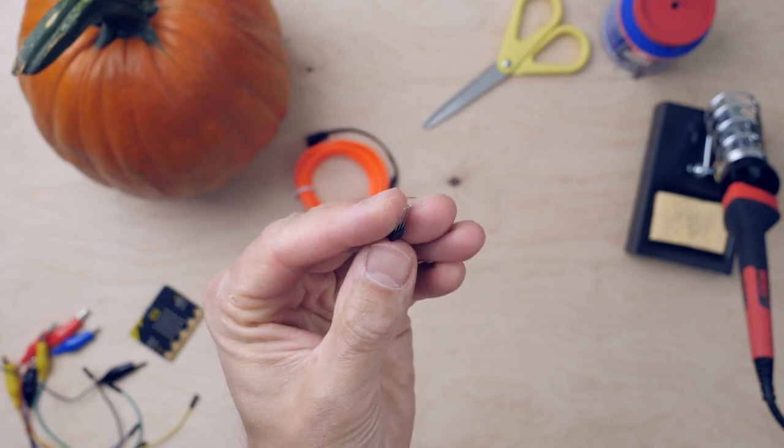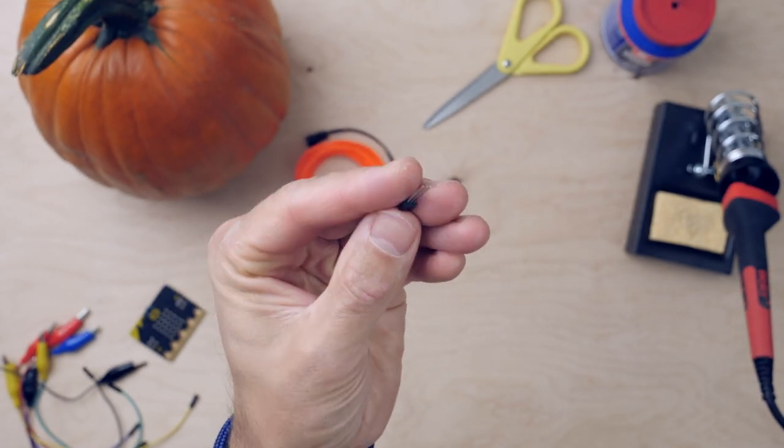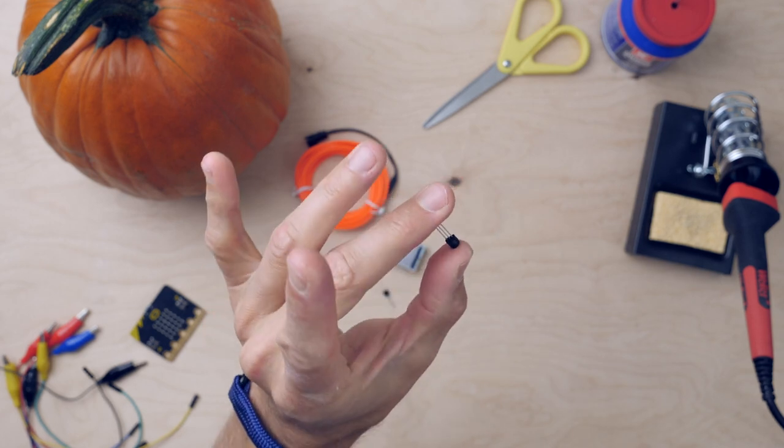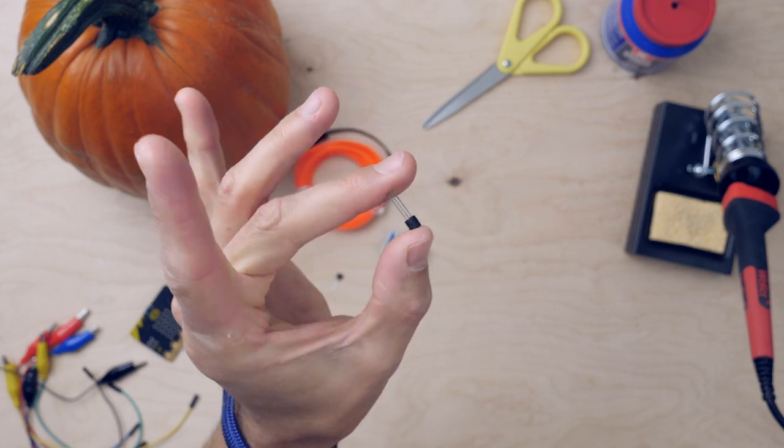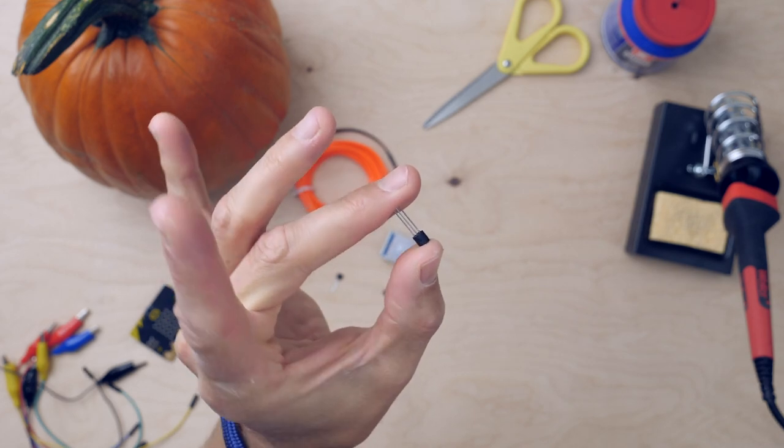You will also use a transistor. A transistor is used to strengthen electronic signals or to switch. In this project you will use the transistor to switch the electrical current to the EL wire on and off.